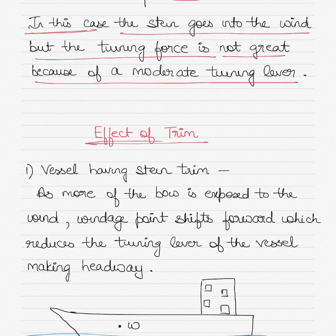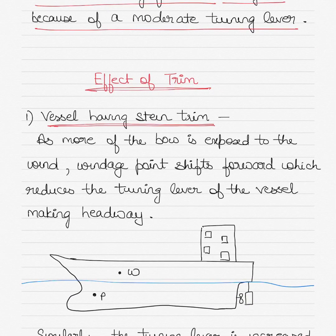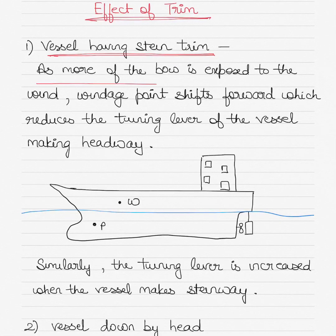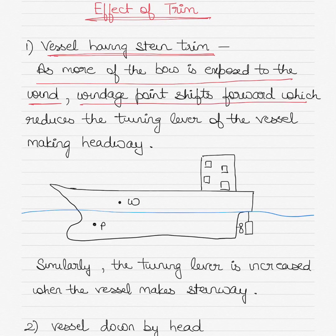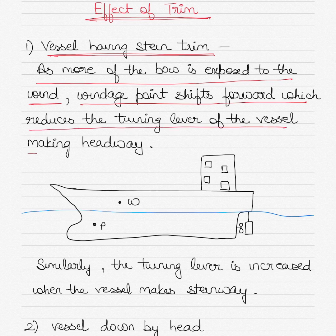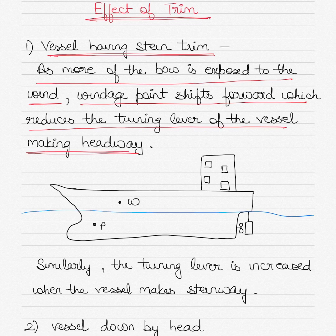Now for the effect of trim — in the above cases we only considered ships on even keel with no trim. If the vessel has a stern trim, as is normally the case, more of the bow is exposed to the wind, so the windage point shifts forward. This reduces the turning lever when making headway, since both the pivot point and windage point are shifted forward. Conversely, the turning lever increases when the vessel makes sternway, because the pivot point shifts aft while the windage point is already forward.